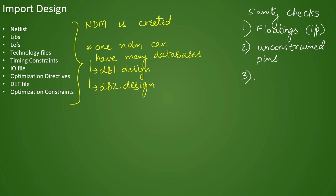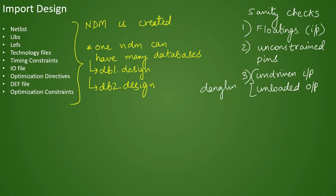The third sanity check is for undriven inputs and outputs. You cannot have undriven inputs — any port with no connectivity is undriven. Similarly, you cannot have unloaded outputs — an output port that does not connect anywhere is simply dangling. You cannot have any dangling ports in your design. The fourth sanity check is whether ports are correctly matched — if a port is an input port, it must be represented as an input port, and an output port must remain an output port. Port direction should not change.